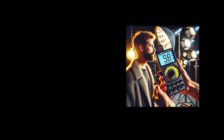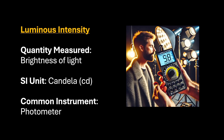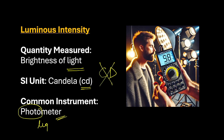The next one might be new to you — it is luminous intensity, which actually measures the brightness of light. We can actually measure how bright the light is. The SI unit is candela and the symbol is small c, small d — not capital C, capital D, but small c, small d. The common instrument used is a photometer. As the name suggests, photo is for light, so a photometer is a meter used to measure the brightness of light.